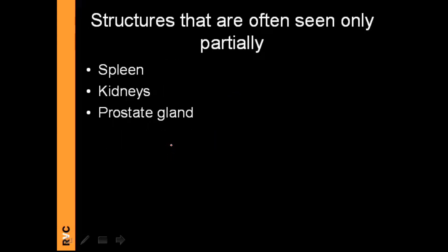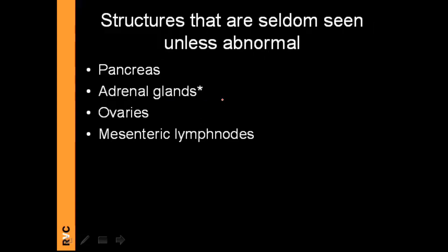Structures that we only see partially include the spleen — especially in cats it's not so often visible, and usually it's visible when it is big — the kidneys, which may not be clearly visible, and that is fine, and the prostate gland. Other organs we seldom if ever see include the pancreas, the adrenal glands (which in cats can be mineralized normally, while in dogs that is bad news), the ovaries, and the mesenteric lymph nodes. These are organs we seldom see unless they are abnormal.